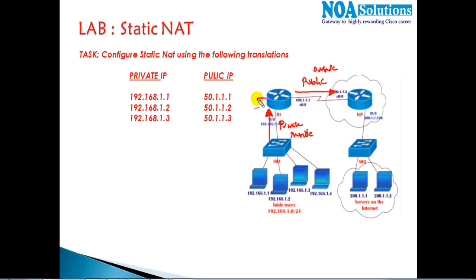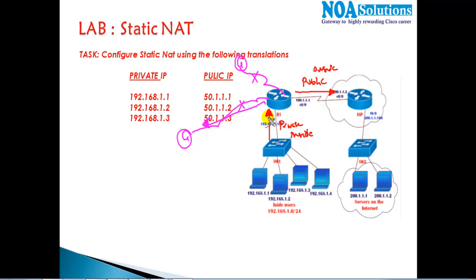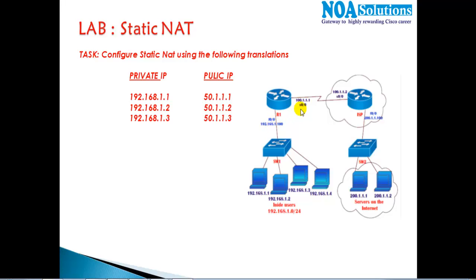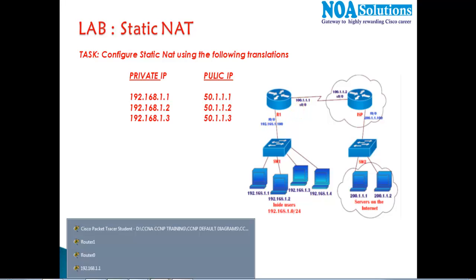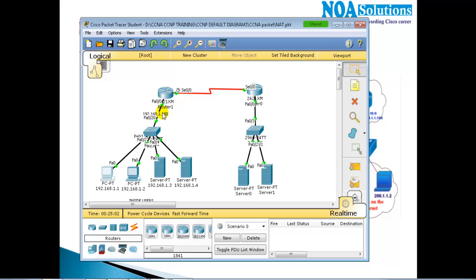An important note: if you have interfaces connecting to your own branch offices, those are not outside interfaces. We want traffic to those branches to keep private IPs, not go through NAT. Only the interface connecting to the ISP is the outside interface. In this scenario, f0/0 is the inside interface and s0/0 is the outside interface.